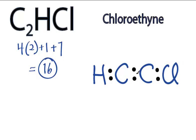Go around the outside, so we have 2, 4, 6, 8, 10, 12, back to the middle, 14, and 16. So we've used all 16 valence electrons for C2HCl.